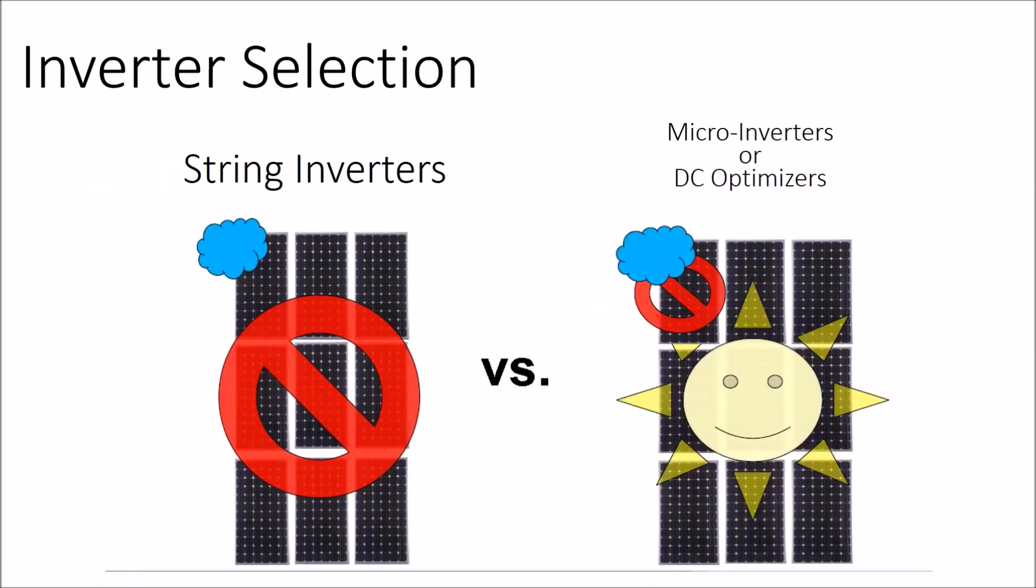The reason is, remember old-school string inverters, the littlest bit of shade would wreak havoc on the entire system. So microinverters and DC optimizers nowadays serve a fire protection function, but they used to just serve a performance boost in shaded environments. Nowadays, the string inverters are more shade tolerant, so the shading arguments are still there but not as much as they have been in years past.